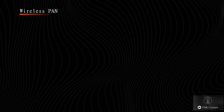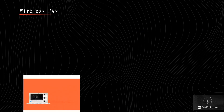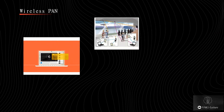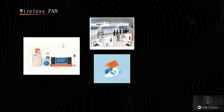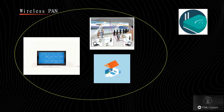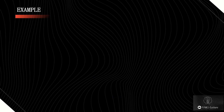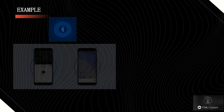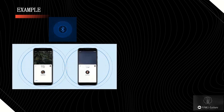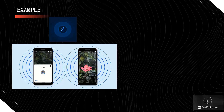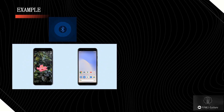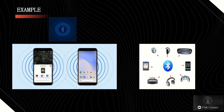Wireless PAN is a network of interconnected devices around an individual's workshop or home in which the connections are wireless, and it uses short range within about 10 to 20 meters maximum. For example, Bluetooth is one of the standards of wireless technology that provides communication or sharing of photos or files between different devices such as cell phones and accessories without having to use wires.